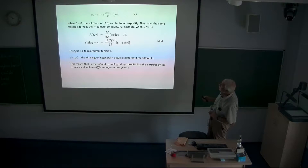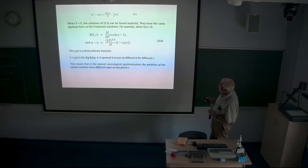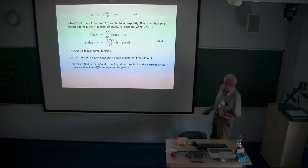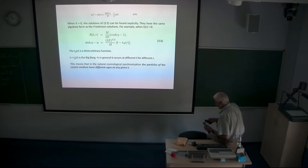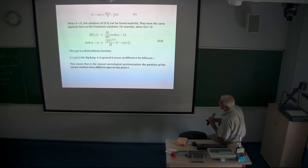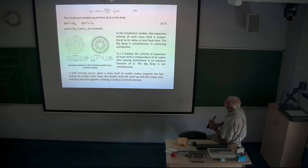When lambda equals zero, the solutions can be found explicitly and have the same algebraic form as the Friedman solutions. The explicit form depends on the sign of the function E. When E is positive, this is the parametric form of the solution of the evolution equation, where T_B is a third arbitrary function arising as an integration constant. The moment when T equals T_B is the Big Bang, and in general it occurs at different times for different values of the radial coordinate.